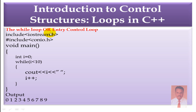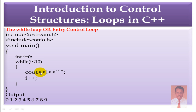Now we will see an example for the while loop, also called Entry Control Loop. We have #include iostream.h, #include conio.h, and void main. Integer i = 0. The while loop condition is i < 10. We print the i value and increment i with i++. First, i = 0, 0 < 10 so it prints 0 and increments to 1. This continues: 1, 2, 3, 4 — until 9 < 10 prints 9, then i becomes 10, 10 < 10 is false, so the loop ends. The output is 0 through 9.